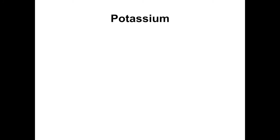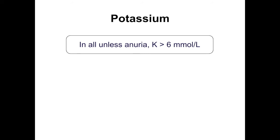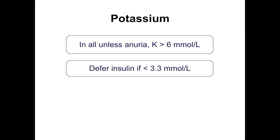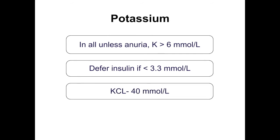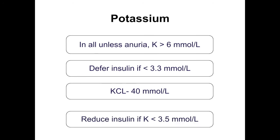Potassium replacement is required for every child with DKA unless there is anuria or hyperkalemia. If hypokalemia is present at diagnosis, do not start insulin — this will result in life-threatening hypokalemia. Replacement should be potassium chloride at 40 mmol/L. If potassium continues to fall despite replacement, consider reducing insulin — prolonging recovery is safer than causing severe hypokalemia.